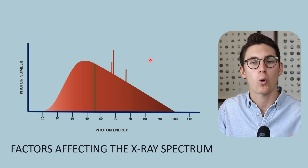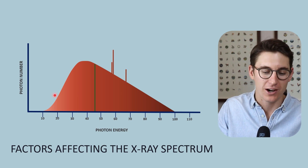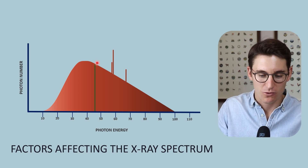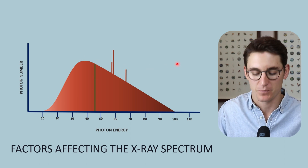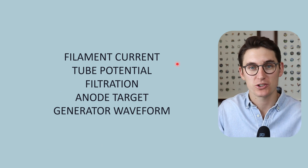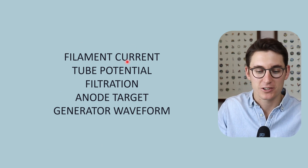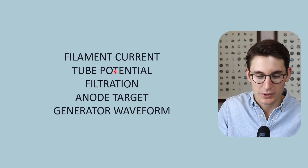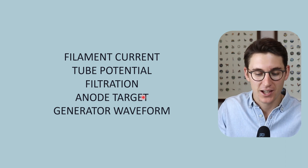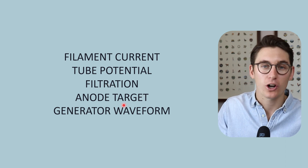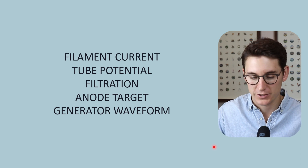The x-ray beam quality refers to the average energy of our x-ray beam, represented by this green line here. So these are the five factors we're going to go over today: our filament current, our tube potential, filtration — both inherent and added — anode target material, and our generator waveform.